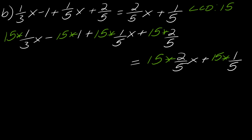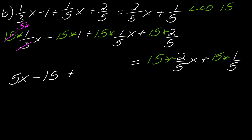Now let's go through piece by piece and do our cancellations. Three goes into fifteen five times, so five times one x gives 5x. Then 15 times 1 is just 15, so I write that as minus 15. Next, five goes into fifteen three times, so three times one x is 3x. And five goes into fifteen three times, so three times two is 6.